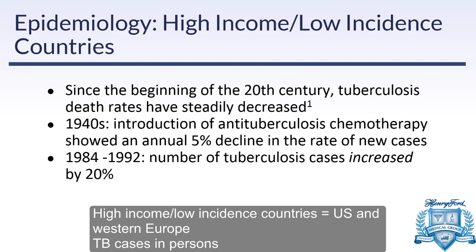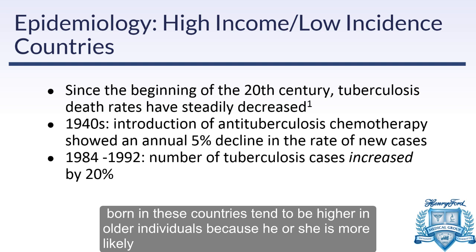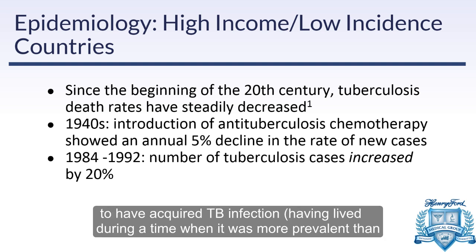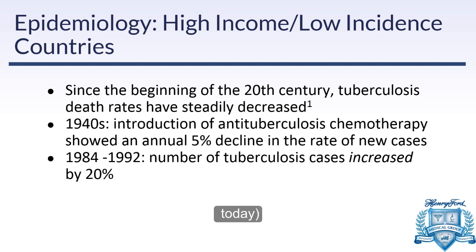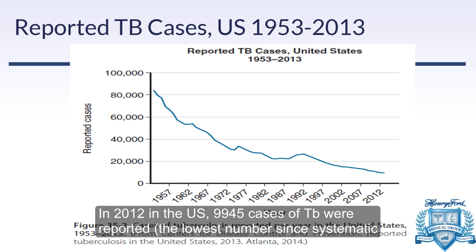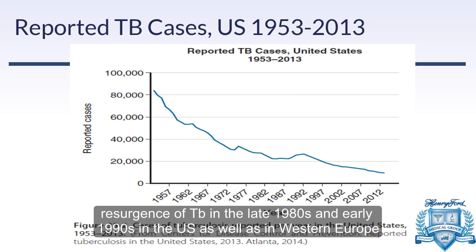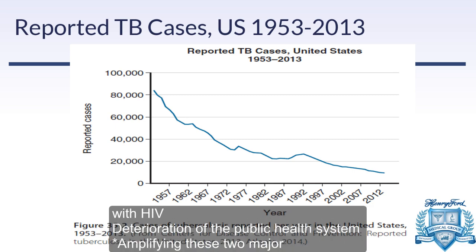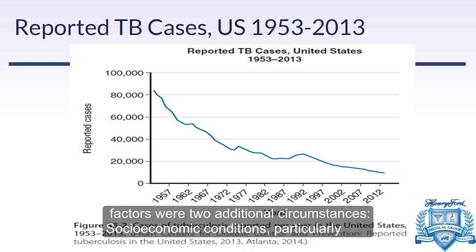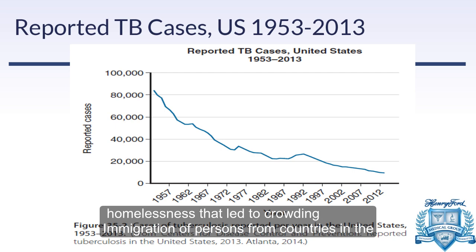Looking specifically in high-income, low-incidence countries like the U.S.: since the beginning of the 20th century, TB rates have steadily decreased. In the 1940s, starting with anti-tuberculosis chemotherapy, there was about a 5% decline per year, except between the mid-1980s and early 1990s when there was a slight increase. That increase was thought to be due to the HIV epidemic and increased immigration from areas with higher incidence of TB. Since that time, rates have been declining.